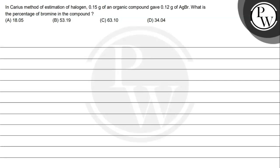Hello, let's read out this question. In Carius method of estimation of halogen, 0.15 gram of an organic compound gave 0.12 gram of AgBr. What is the percentage of bromine in the compound? Option A: 18.05, Option B: 53.19, Option C: 63.10, Option D: 34.04.